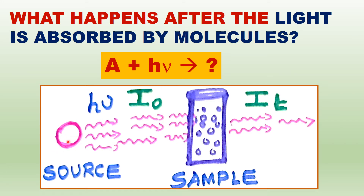This is the source. The source is the light radiation that emits photons. It is emitted in the form of photons — light packets, quanta called photons. This is the sample molecules.